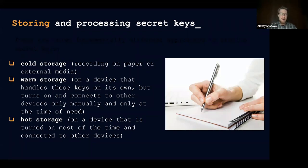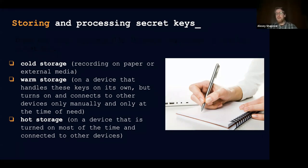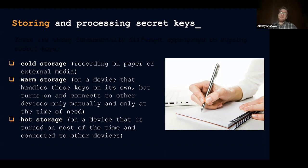Hot storage means a device that is turned on most of the time and is connected to other devices. Most Bitcoin software wallets are hot wallets — this is convenience at the sake of security. Probably the biggest rule of thumb for digital security is that people choose convenience over security. That's why we have simple passwords that are easy to guess, people reusing the same password over and over, and so many people using hot software wallets instead of warm and cold wallets — because it's always there on your computer, you can send a transaction at any time, and it always syncs with the network.